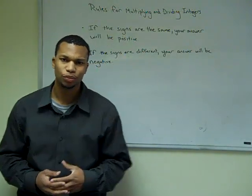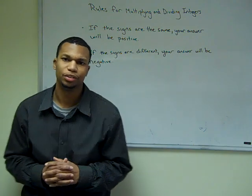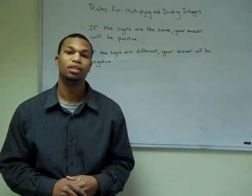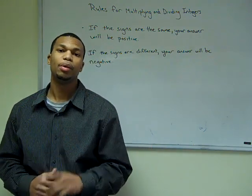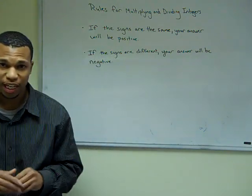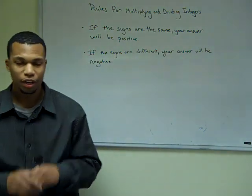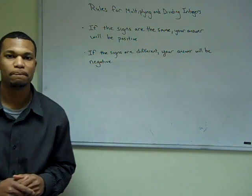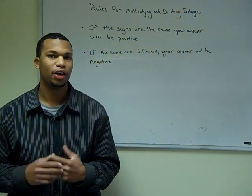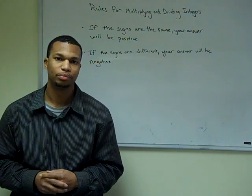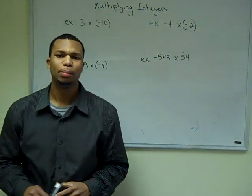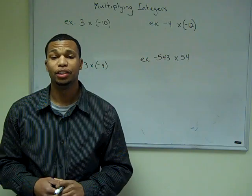So now let's get into the rules for multiplying and dividing integers. It pretty much comes down to two instances. The first thing we want to check for is if the signs are the same — if the signs are the same, then our answer is going to be a positive number. If our signs are different, then our answer is going to be a negative number. Now that we have the rules, let's do some examples of just multiplying integers.